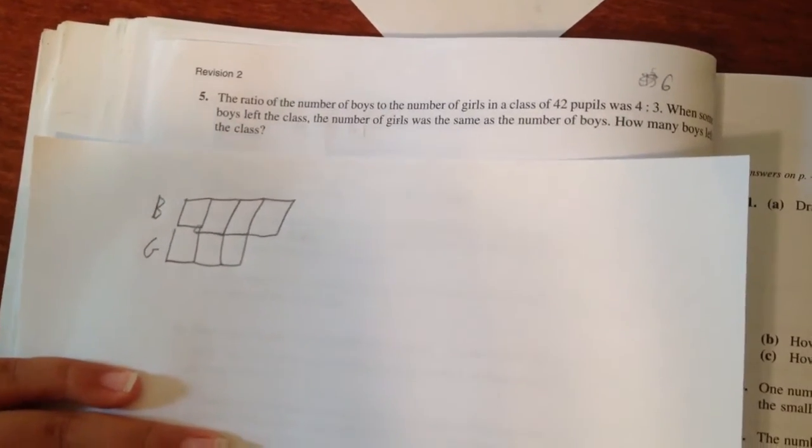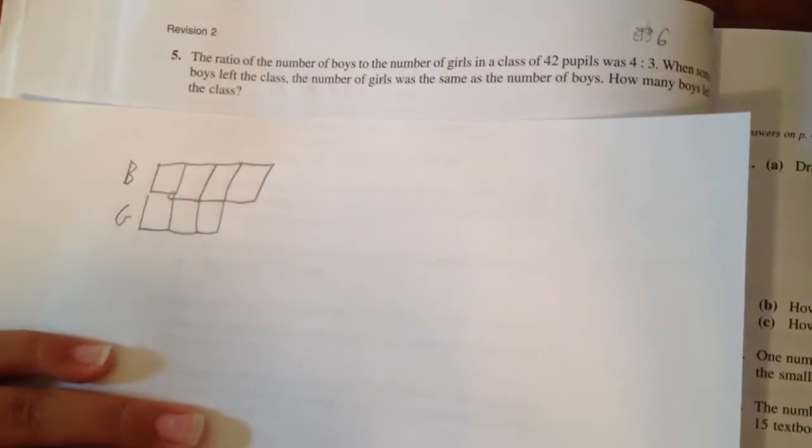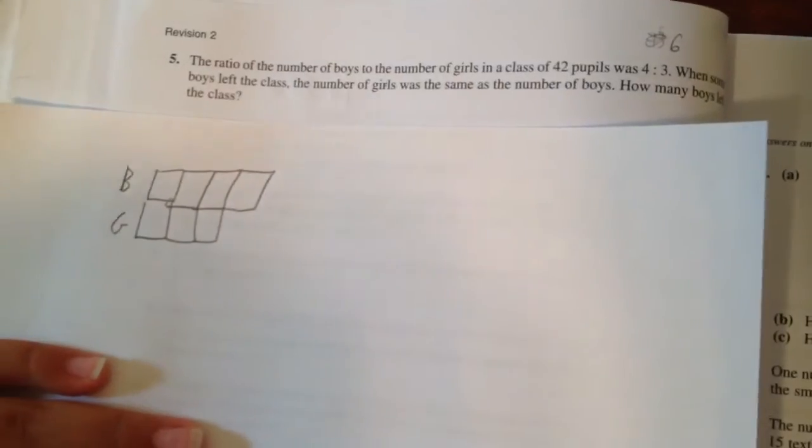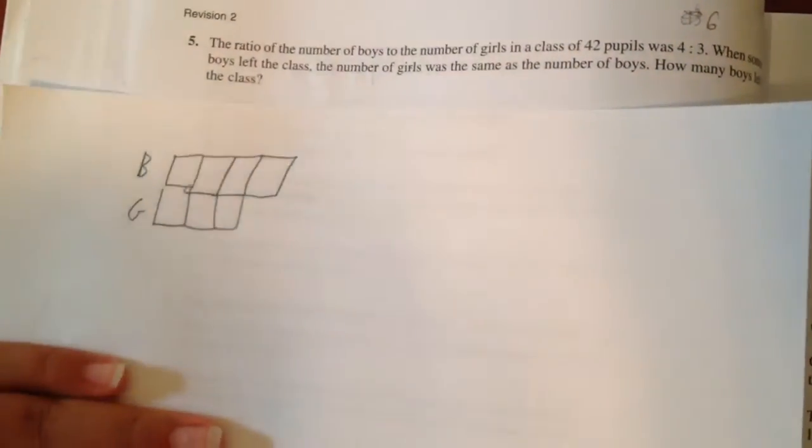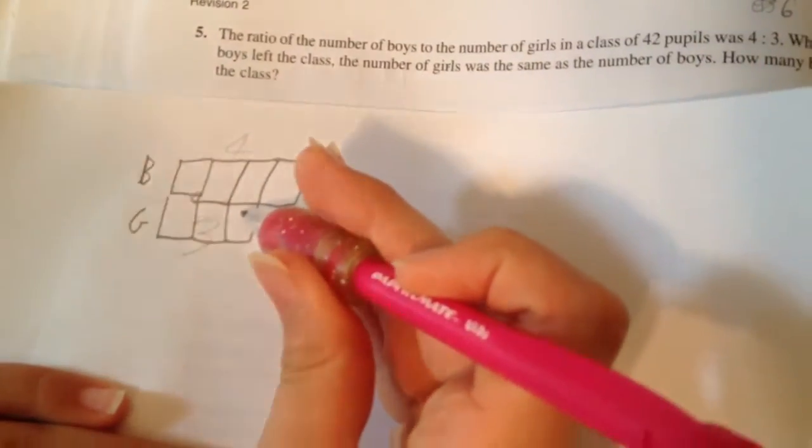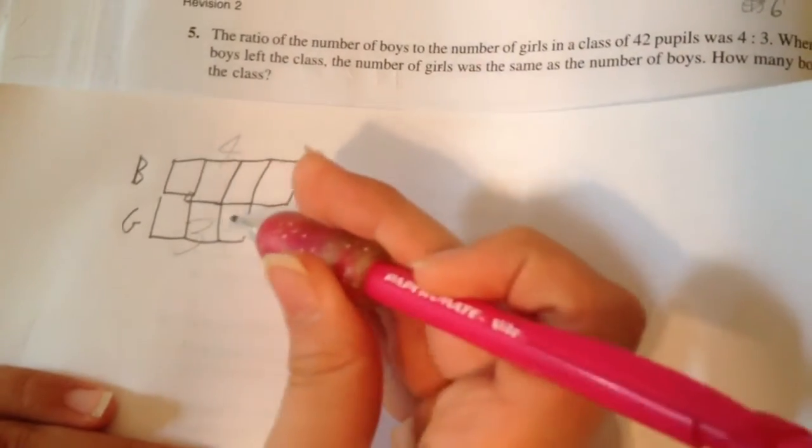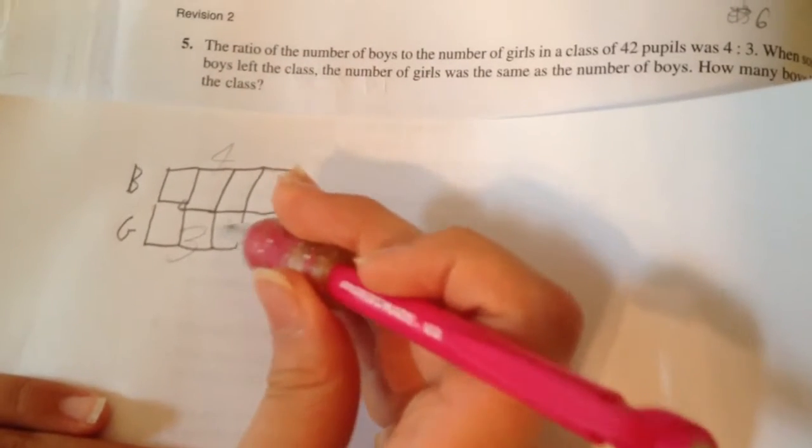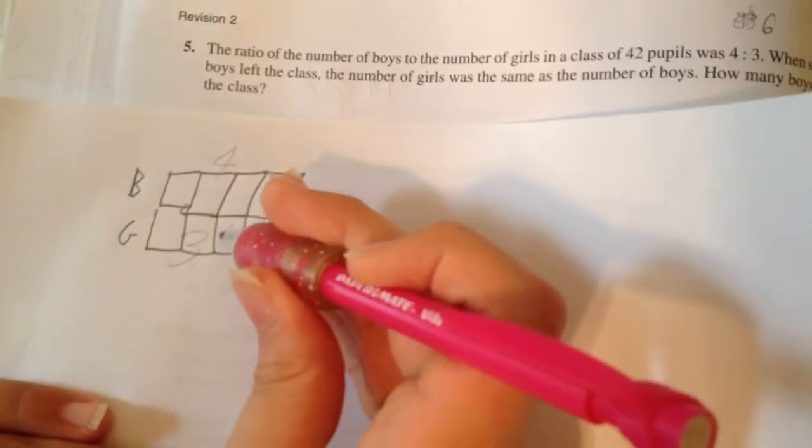When some boys left the class, the number of girls was the same as the number of boys. We know there are 4 units of boys and 3 units of girls. We don't know how many boys or girls 1 unit is, but they all have the same number, Y.